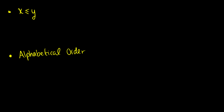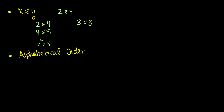Here are a couple of types of partial orders. We have x less than or equal to y. Suppose we have two less than or equal to four. It's reflexive — for instance, two less than or equal to two is true for any element. It's transitive — if two is less than or equal to four and four is less than or equal to five, then two is less than or equal to five. And it's anti-symmetric — because if x is less than or equal to y and y is less than or equal to x, then x equals y. So that's a partial order.